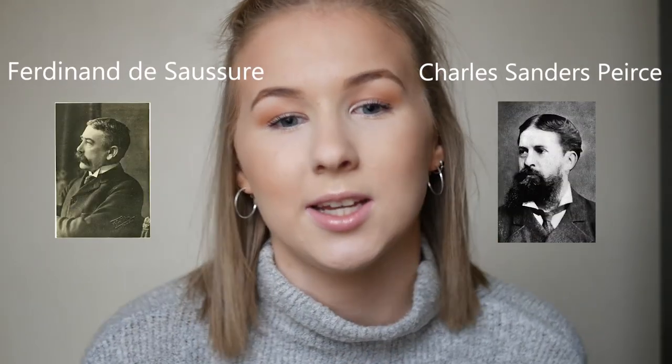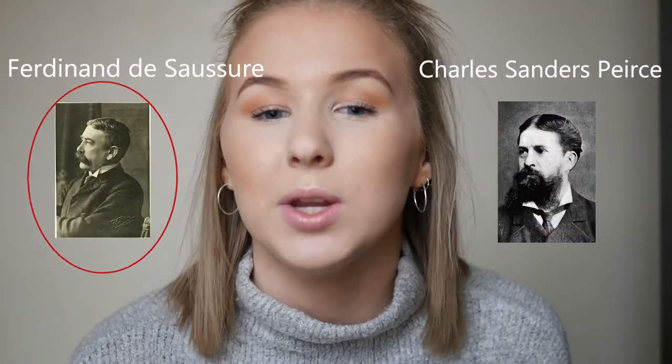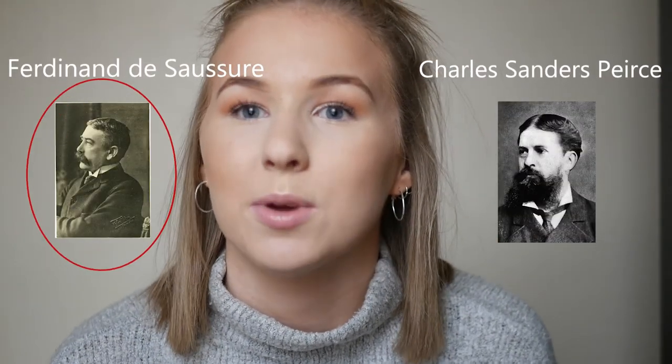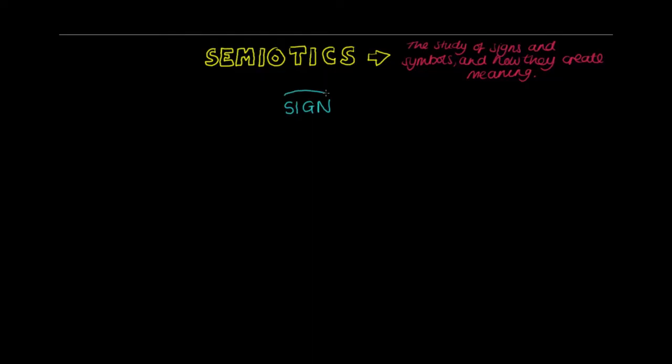Originally Saussure stated that we communicate through a system of signs which can really be anything like images, words, and more straightforwardly signs themselves. Semiotics describes how we can actually understand what we're seeing when we see these signs. They can be broken down into two parts: the signifier and the signified.